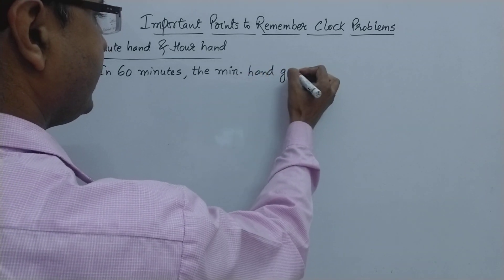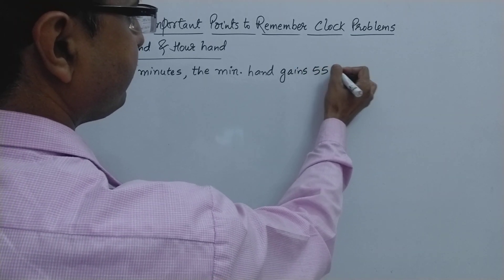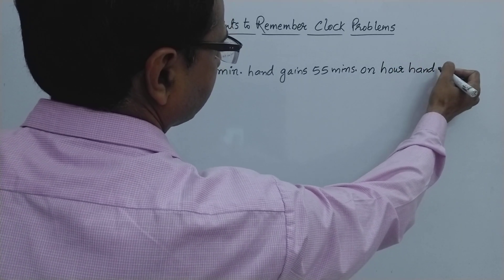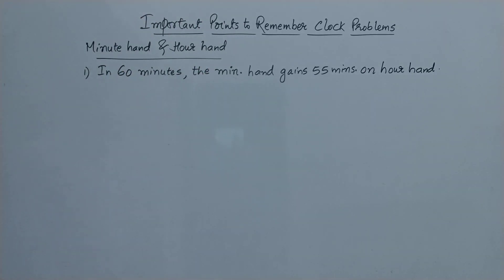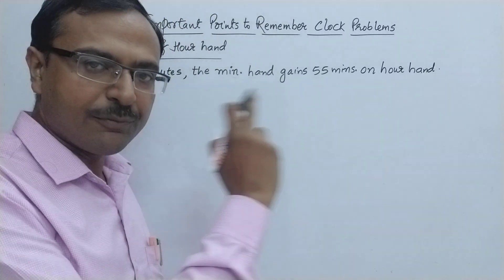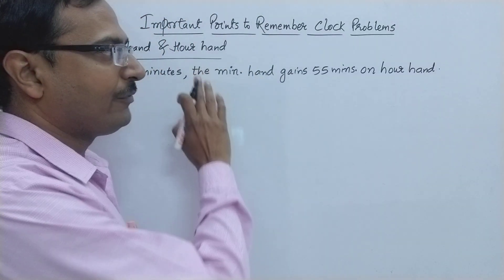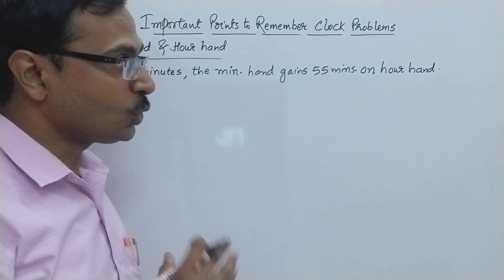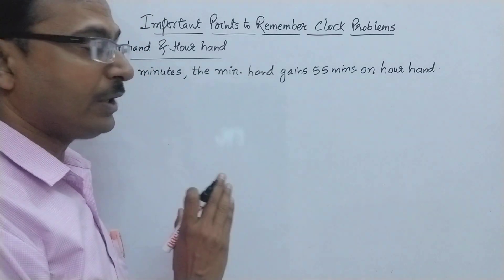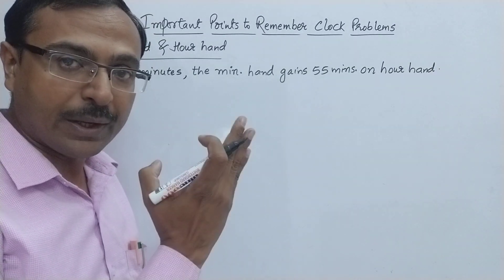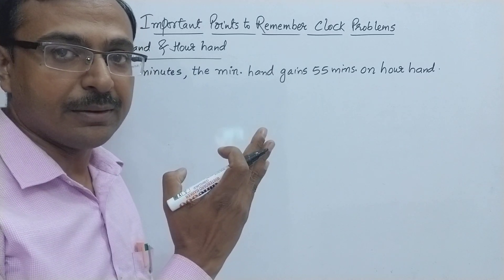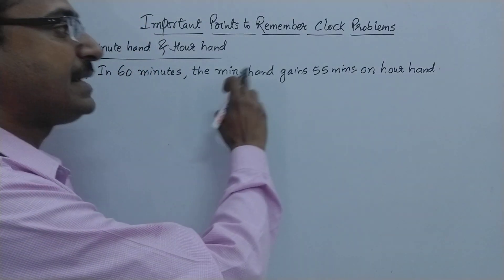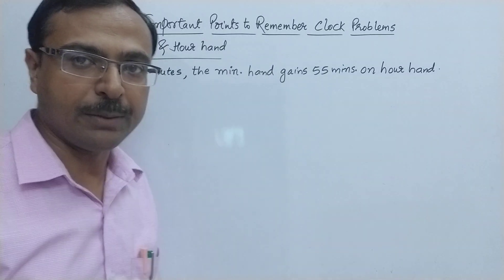The minute hand gains 55 minutes on the hour hand. What is the meaning of this? Whenever there is one full rotation of the minute hand, that means 60 minutes have passed, but in those 60 minutes the hour hand will move only five minutes — for example from 12 to 1. So the minute hand is gaining 55 minutes on the hour hand. Very important — that's the first point.